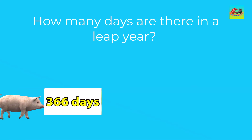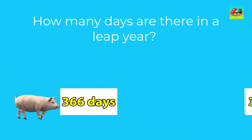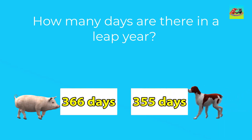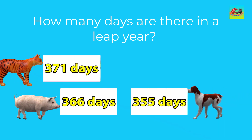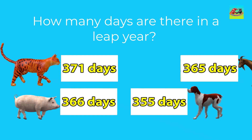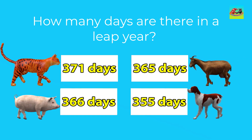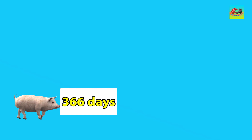How many days are there in a leap year? The correct answer is three hundred sixty-six days. There are three hundred sixty-six days in a leap year.